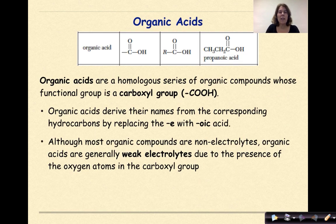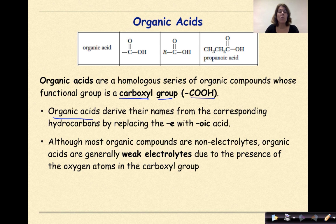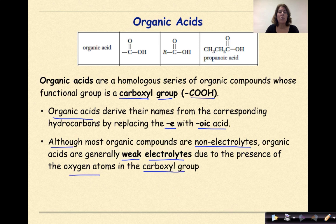Now let's talk about organic acids. Organic acids are a homologous series of organic compounds whose functional group is the carboxyl group, COOH. Organic acids derive their names from the corresponding hydrocarbons by replacing the E with -oic acid. Although most organic compounds are non-electrolytes and won't conduct electricity when dissolved in water, organic acids are generally weak electrolytes due to the presence of the oxygen atoms in the carboxyl group — we'll discuss this more in the acid-base unit.